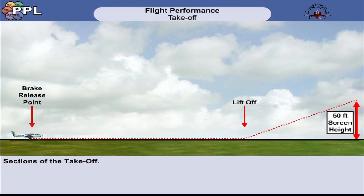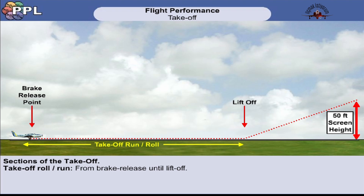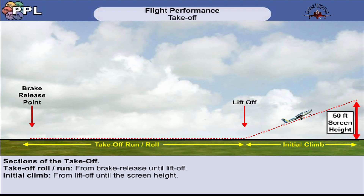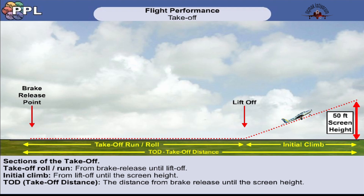The take-off can be divided into two sections. The first is the take-off roll, or take-off run, which is the distance travelled while still on the ground — in other words, from brake release to lift-off. The second section is the initial climb, which is the distance covered from lift-off until it reaches the screen height. The combined lengths of the take-off run and initial climb is known as the take-off distance.